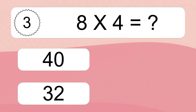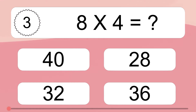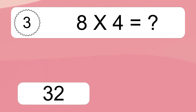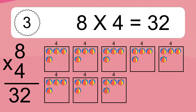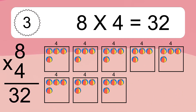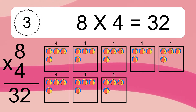8 times 4 equals what? 8 times 4 equals 32. We have 8 boxes, and each box has 4 colorful balls inside. If you count all the balls in all the boxes together, you will have 8 times 4 balls. This equals 32 balls.